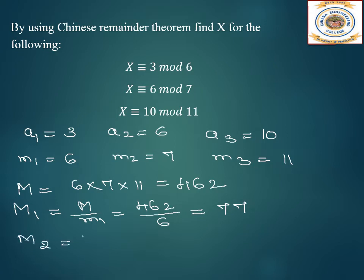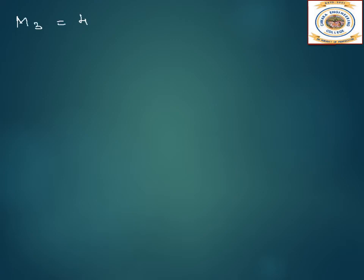M2 is capital M divided by small m2 — 462 divided by 7 — which gives 66. Then M3 is capital M divided by small m3 — 462 divided by 11 — which gives 42.